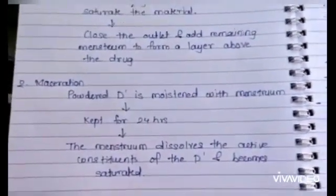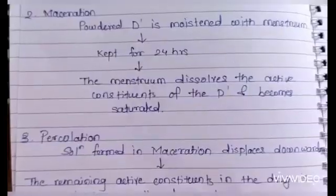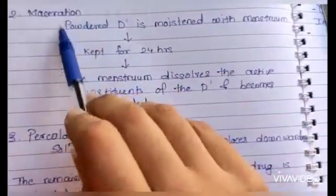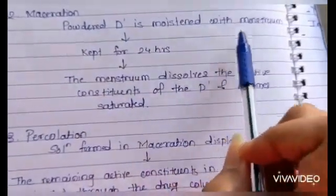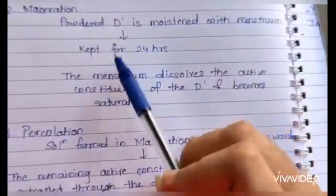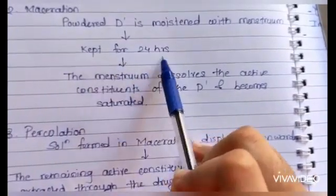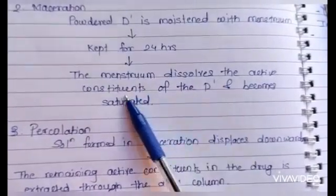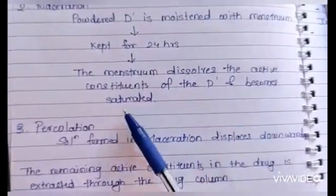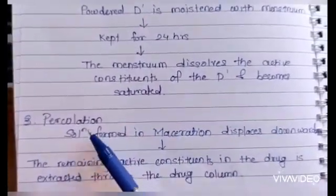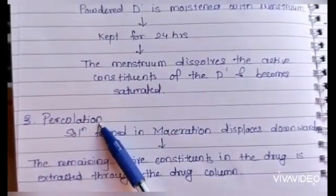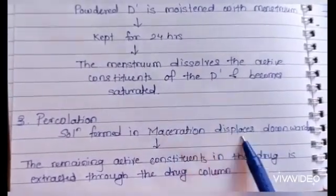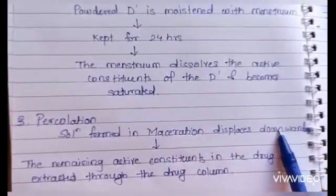The second stage of the percolation process is maceration. The powdered drug moistened in the imbibition stage is kept aside for 24 hours. During this period, the menstruum dissolves the active constituents of the drug and becomes saturated. The third stage is percolation, in which the saturated solution formed during maceration displaces downward and helps in extracting the remaining active constituents present in the drug through the drug column.